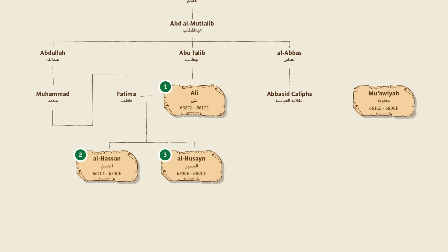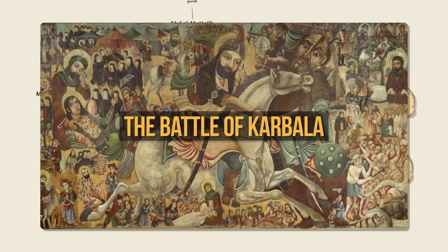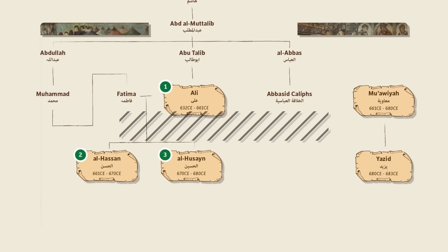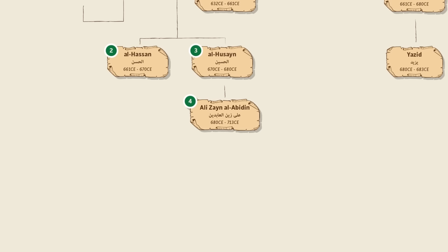Unlike his brother, Al-Husayn was more interested in public life. When Muawiyah died in 680, Al-Husayn came to the forefront of the political drama engulfing the Islamic caliphate. Muawiyah chose his son Yazid to be his heir — this was the first hereditary appointment of a caliph and was seen as extremely un-Islamic, as it led to the formation of what became known as the Umayyad dynasty. Al-Husayn refused to swear allegiance to the Umayyads and, as a result, was killed in the Battle of Karbala in 680. Among the survivors was Al-Husayn's son, Ali ibn al-Husayn, who became the fourth imam.